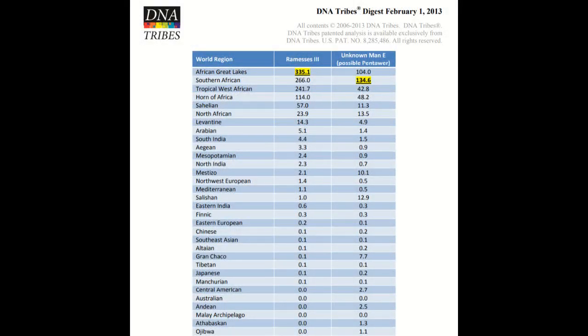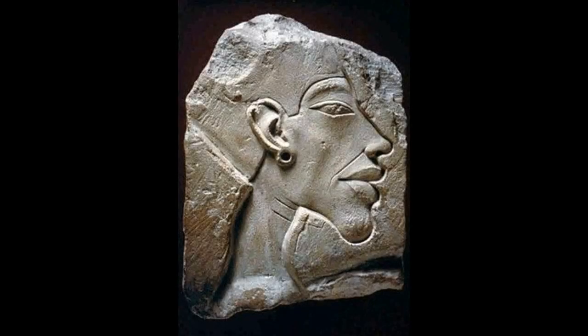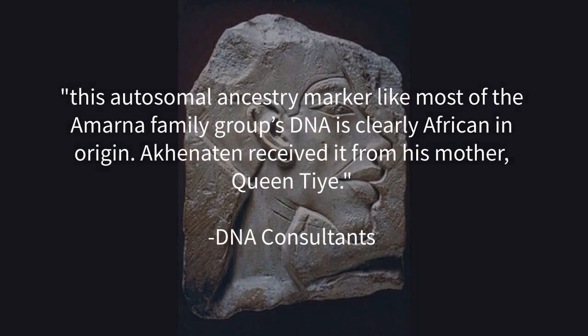Ramses III clusters with sub-Saharan Africans in a similar manner. And in regards to the pharaoh Akhenaten, his autosomal ancestry markers — like most of the Amarna family's DNA — are clearly African in origin.